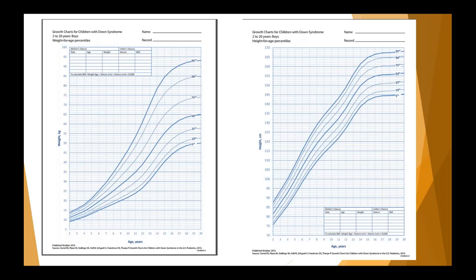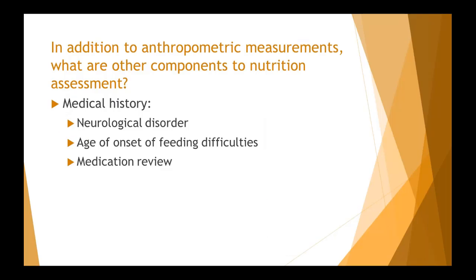What we find most helpful is comparing your patient's anthropometrics to some standardized group to get an idea of how well they are doing. In addition to anthropometric measurements, a dietitian considers medical history — including the neurological disorder, the age at which feeding difficulties appeared, and a review of medications.